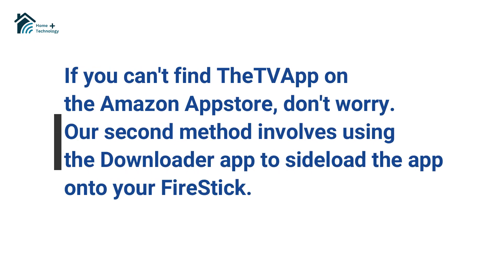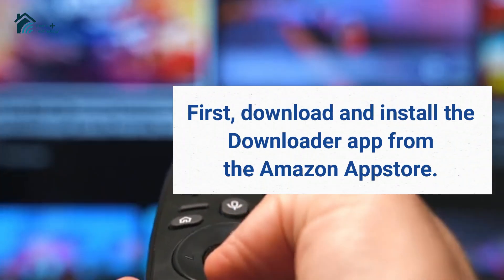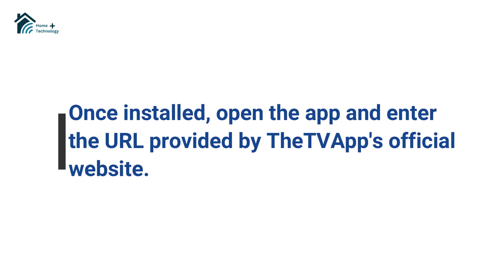If you can't find the TV app on the Amazon App Store, don't worry. Our second method involves using the Downloader app to side-load the app onto your Fire Stick. First, download and install the Downloader app from the Amazon App Store. Once installed, open the app and enter the URL provided by the TV app's official website.